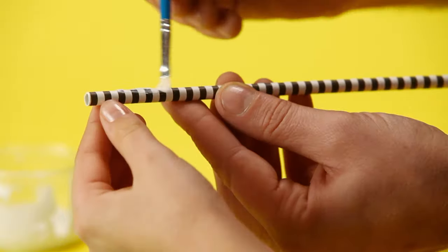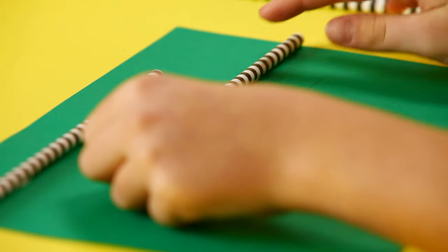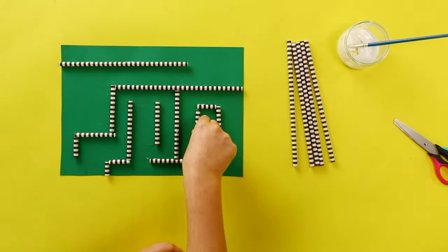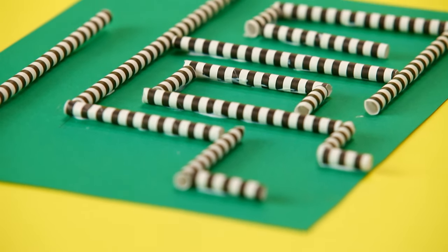Next, glue the straws to the pencil lines to create the walls of your labyrinth. Cut the straws to size to match the length of your lines, then leave it to dry.